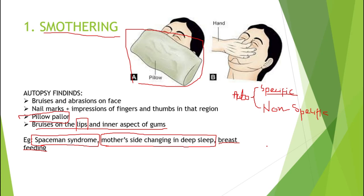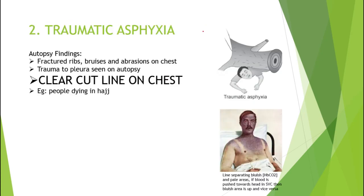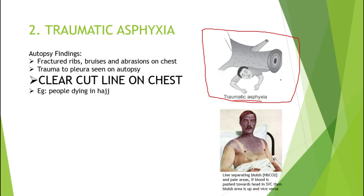The next topic is traumatic asphyxia. This picture conveys almost 80% of the knowledge about traumatic asphyxia. As you can see, the trunk of a tree has fallen on the back of the victim. From this picture, we can deduce that traumatic asphyxia is immobilization of the chest.